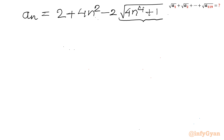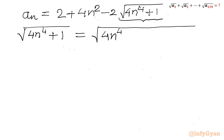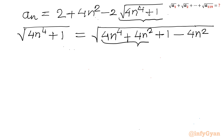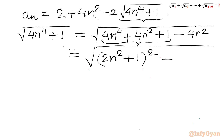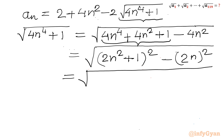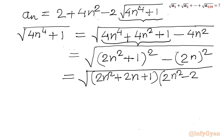Let me simplify 4n⁴ + 1. I will write it as 4n⁴ + 4n² + 1 minus 4n², which gives (2n² + 1)² minus (2n)². Applying the difference of two squares formula again, this factors as (2n² + 2n + 1)(2n² − 2n + 1).